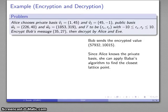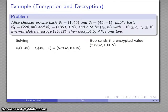So Bob sends the encrypted value out. Now Alice knows the private basis of nearly orthogonal vectors. And that means that we can apply Babai's algorithm to find the closest lattice point.